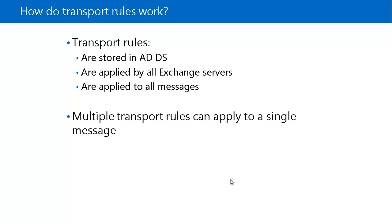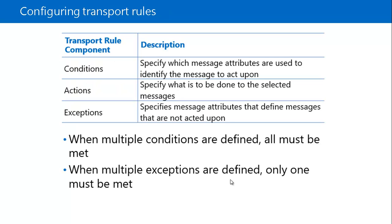Transport rules are composed of three things: conditions, actions, and exceptions. The combination of these parts defines which messages are selected for processing and what is done to those messages. A condition specifies which message attributes are used to identify the message to act upon — such as email headers, recipients, sender, or other message parts that Exchange Server uses to identify the email message to which it applies the transport rule.